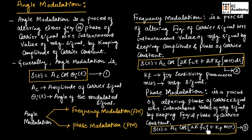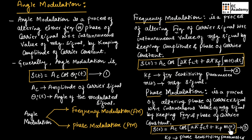This is the general representation of phase modulation. Here, Kp is the phase sensitivity parameter and m(t) is the message signal.